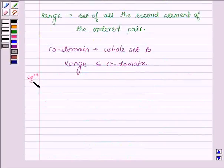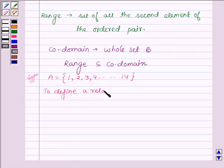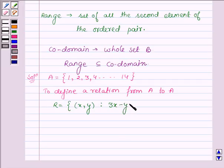And here we are given a set A whose elements are 1, 2, 3, 4 and so on up to 14. And we are required to define a relation from A to A. And the relation R is defined by all the ordered pair X comma Y such that the relation between X and Y is 3X minus Y equals 0 where X and Y belongs to A. This R is the subset of the Cartesian product A cross A.